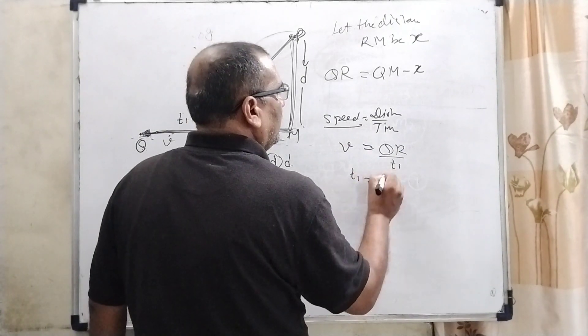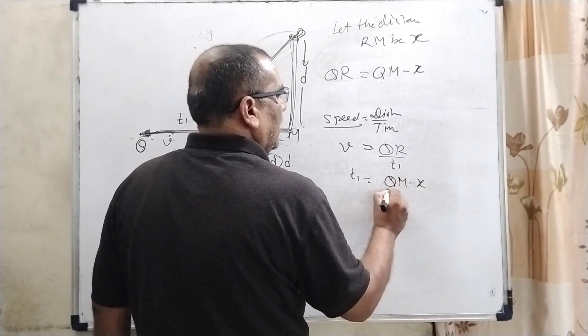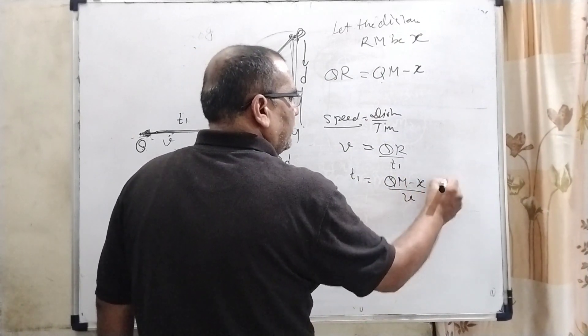Then T1 equals QR. In the place of QR, it can be written as QM minus x upon V. This is the first condition.